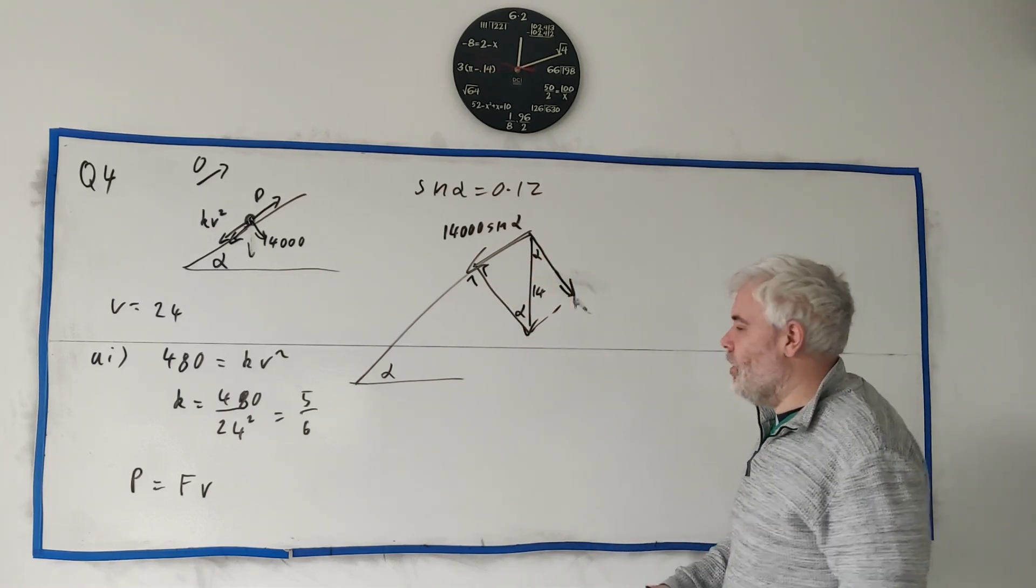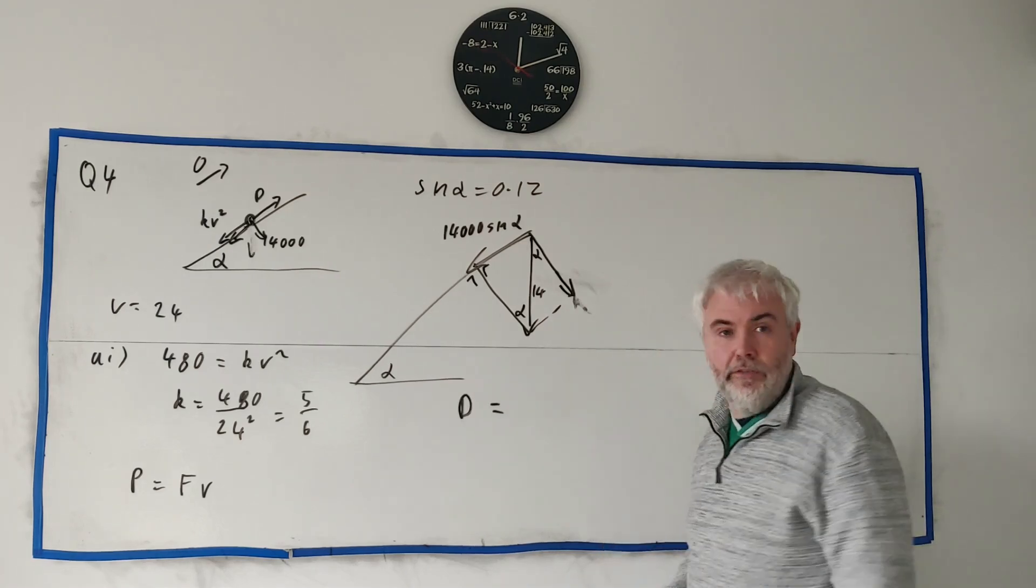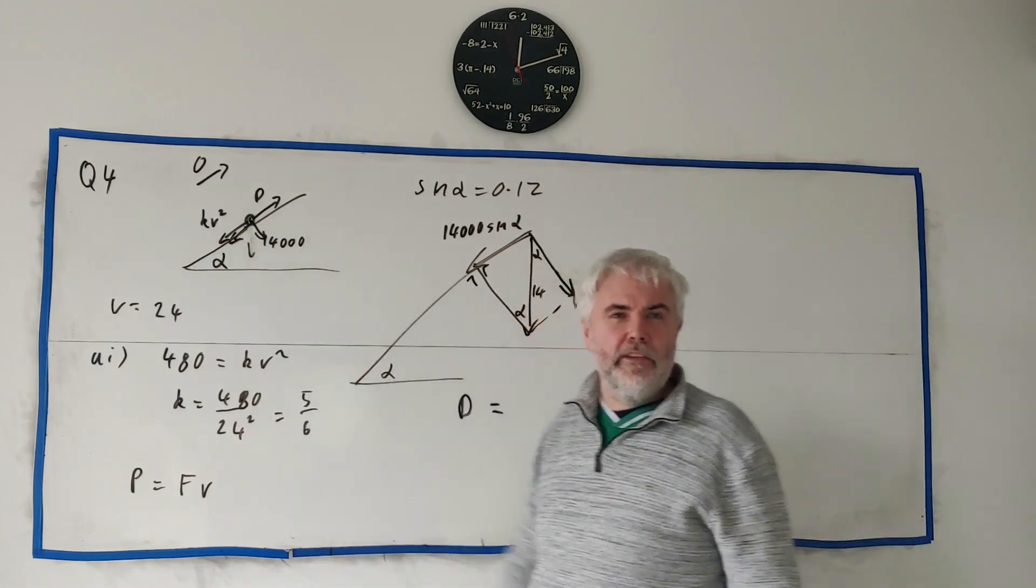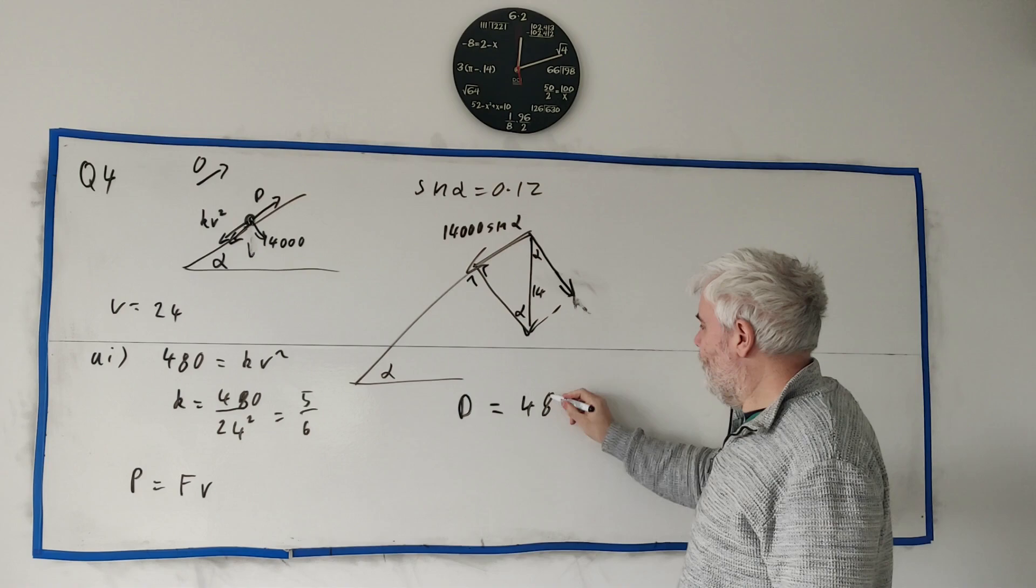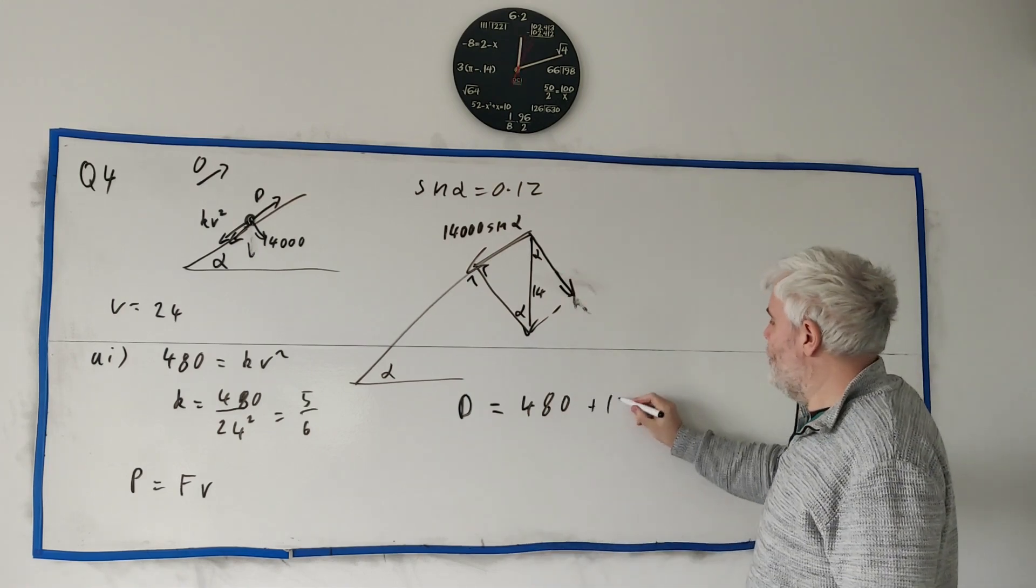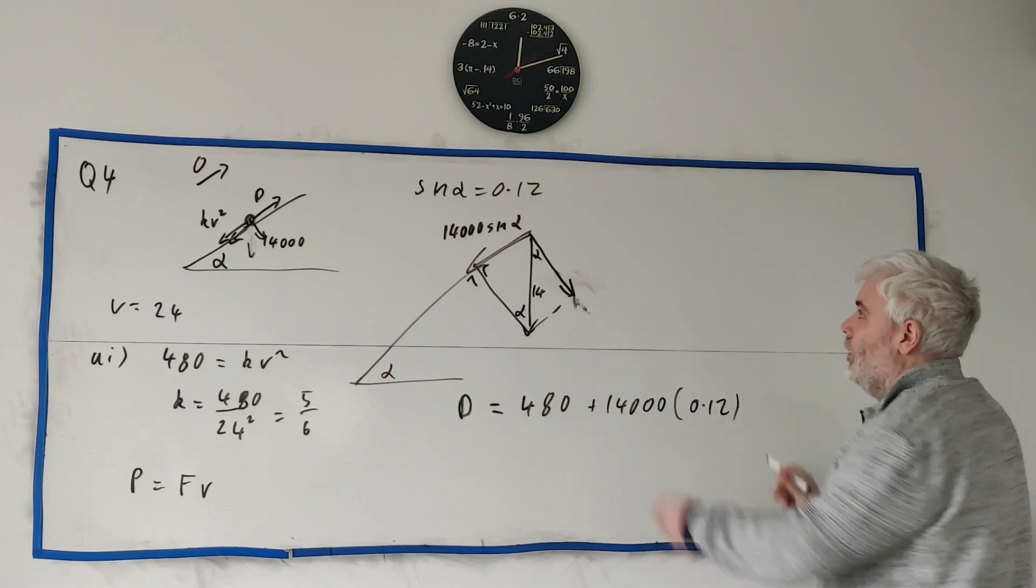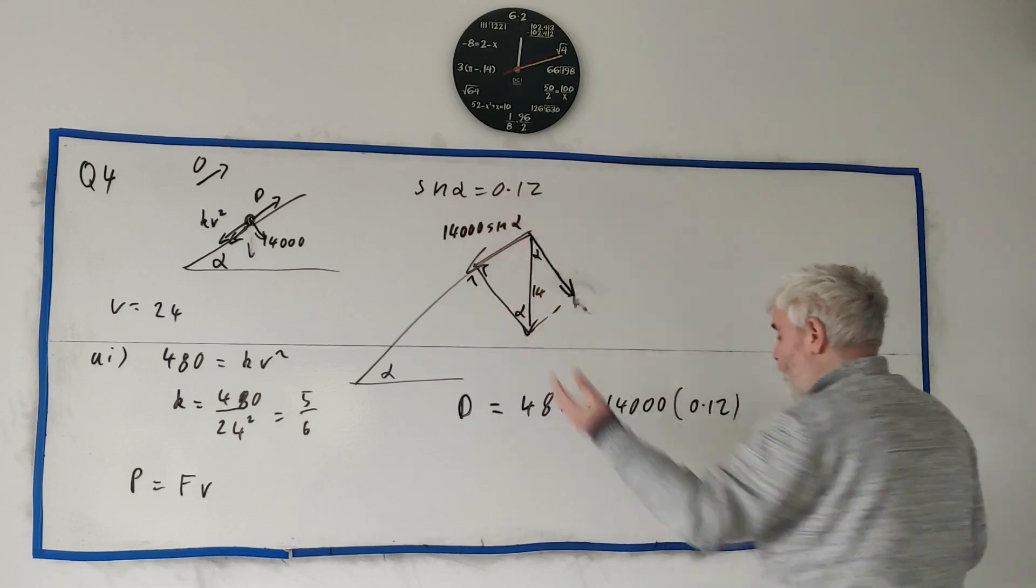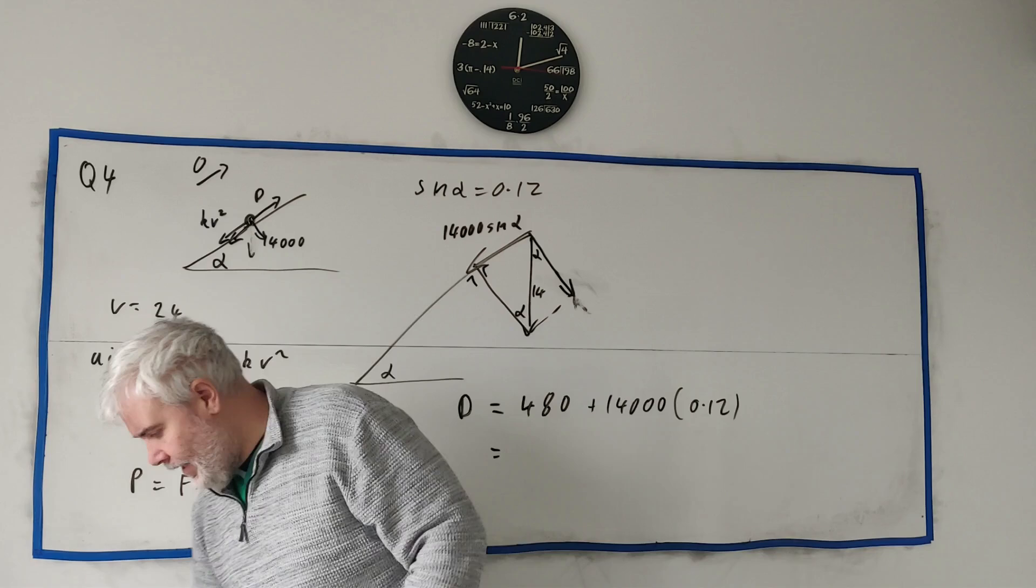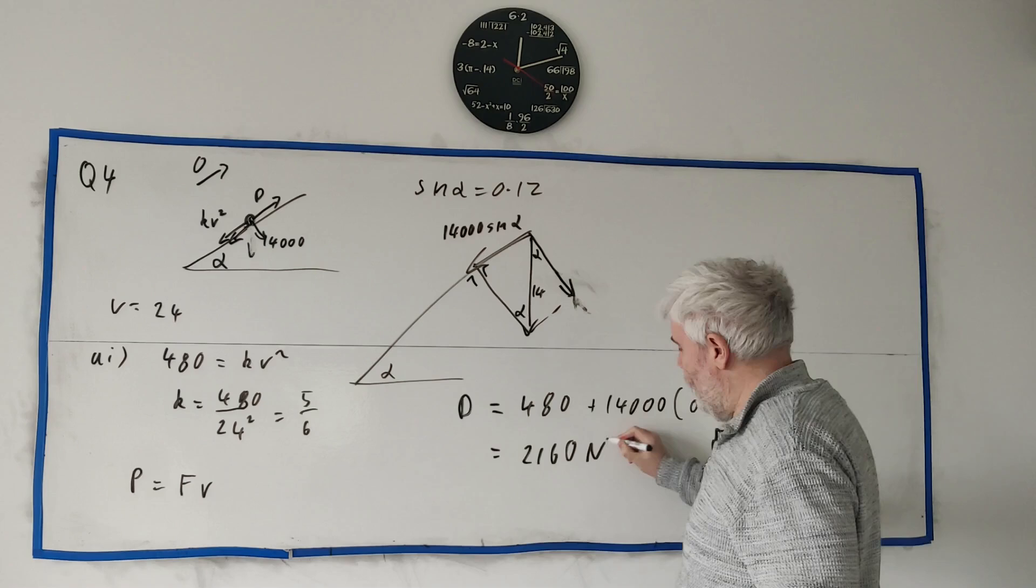The forces going down the hill are, well let's go, it's moving up the hill. Let's go up the hill first. Forces going up the hill are D. They must equal the forces going down the hill. The frictional force. Don't need to use KV squared. They told us it's 480. And the gravitational force we just found here is 14,000 multiplied by 0.12.